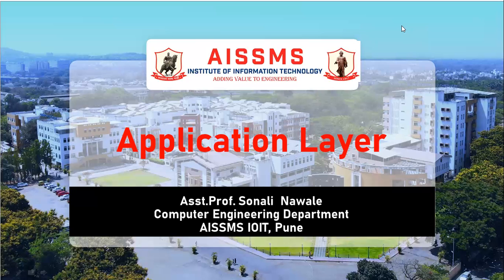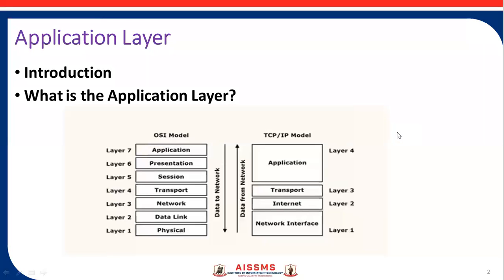What is the application layer? The application layer is the topmost layer of the OSI and TCP/IP model. The application layer in the TCP/IP model is created by combining the top three layers: the application layer, the presentation layer, and the session layer. An application layer is an abstraction layer that specifies the shared communication protocol and interface method that hosts in a network use. It is the layer closest to the end user, implying that both the application layer and end user can interact with the software application directly.